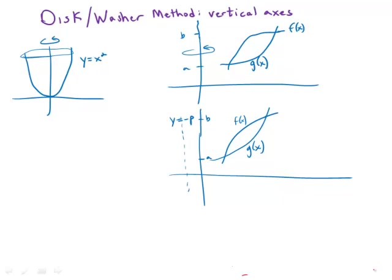Now we'll consider what happens when we have a vertical axis of rotation. For example, suppose I want to rotate the parabola y equals x squared around the y axis now. We can still use disk method or washer method, but we have to be careful here. We have to consider very carefully.